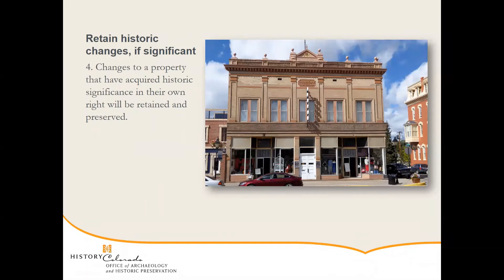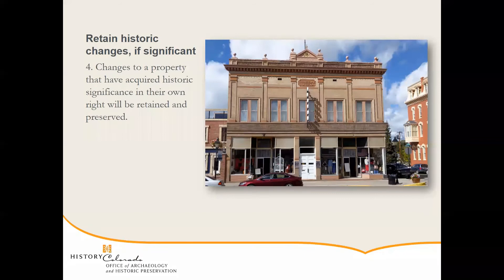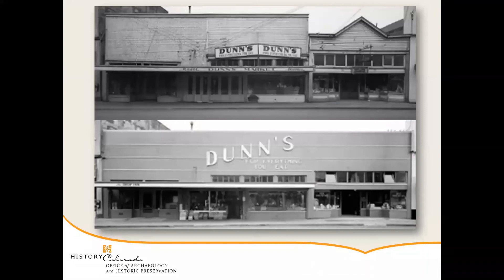Standard number four is to retain historic changes if they are significant. Buildings change over time and we need to respect that. The national and state register criteria are written in such a way that it does respect those changes over time if they happened historically. Here we have a nice example from a building in Leadville that had some changes to the storefront on the bottom level in the 1950s. The building was originally built in 1910, but those 1950s changes are now historic as well and significant in their own right, so we would want to preserve those too. Because this is rehabilitation and not a restoration, we want to keep the bottom storefront even though it is not what was originally there — it's still the historic storefront.